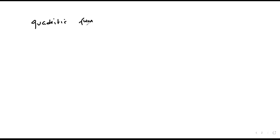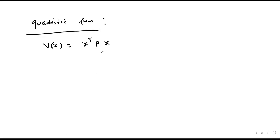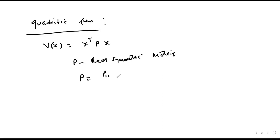We look at the quadratic form of a function. The quadratic form of a function v(x) can be written as x-transpose times P times x, where P is a real symmetric matrix. For example, if P is a 2x2 matrix, we have entries p11, p12, p21, and p22. Since P is real symmetric, p12 equals p21.